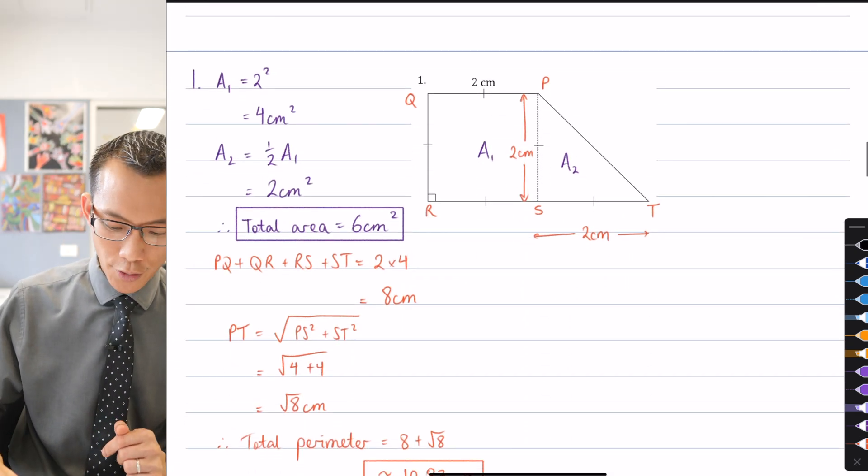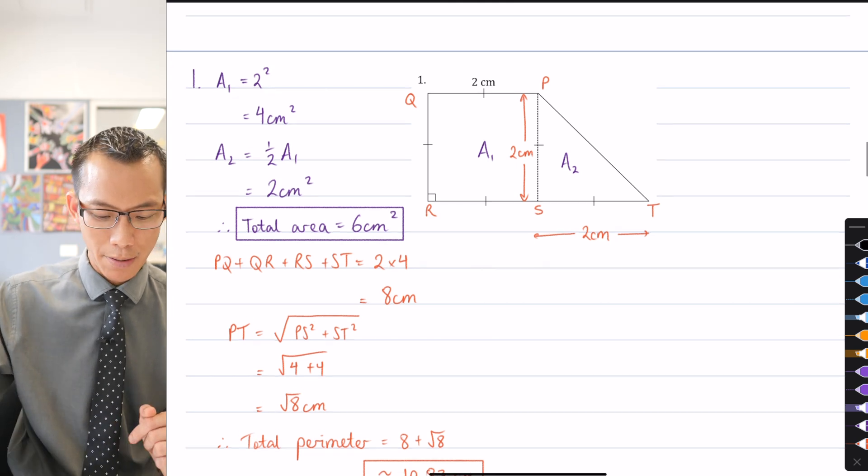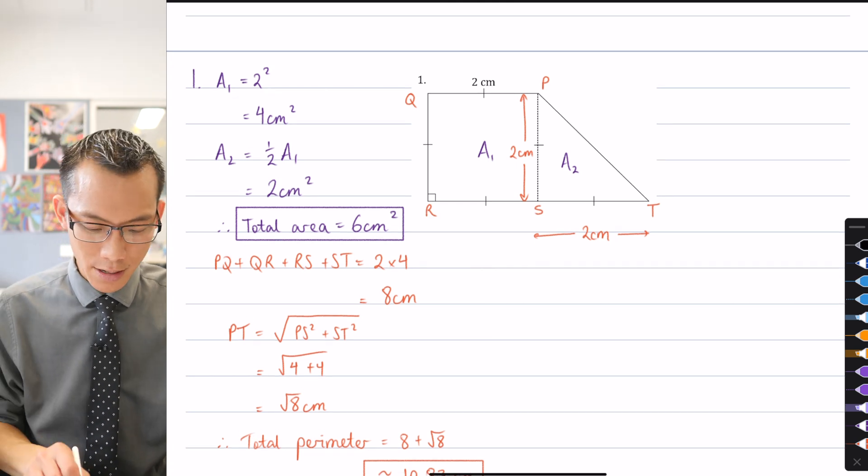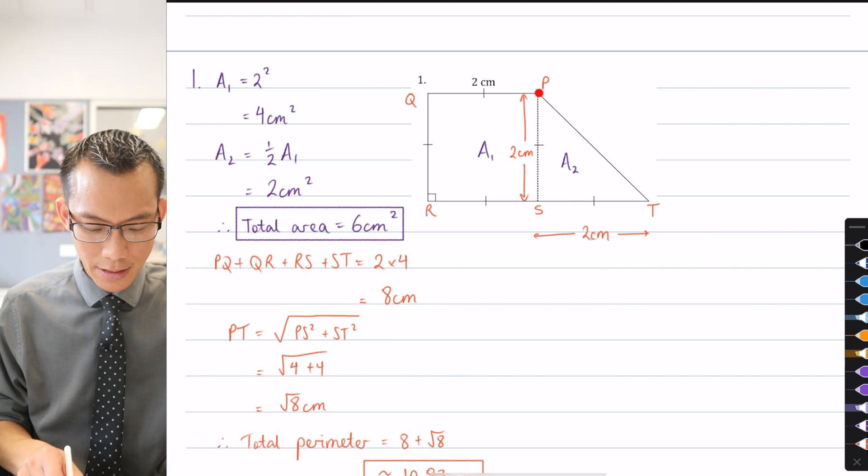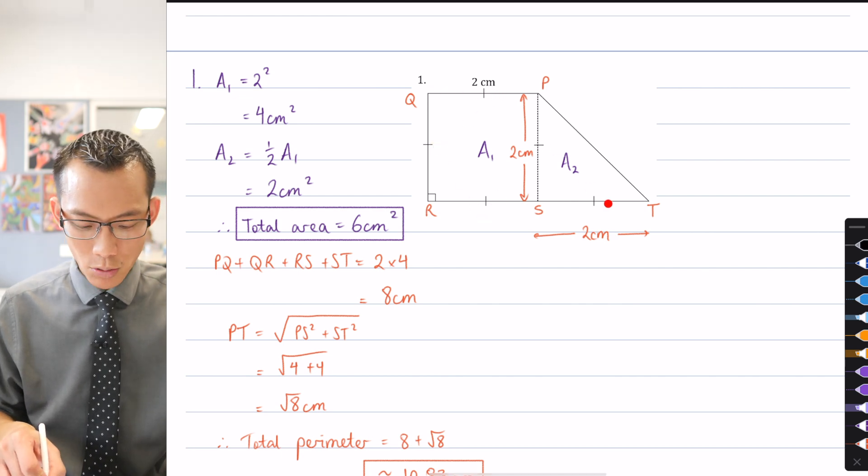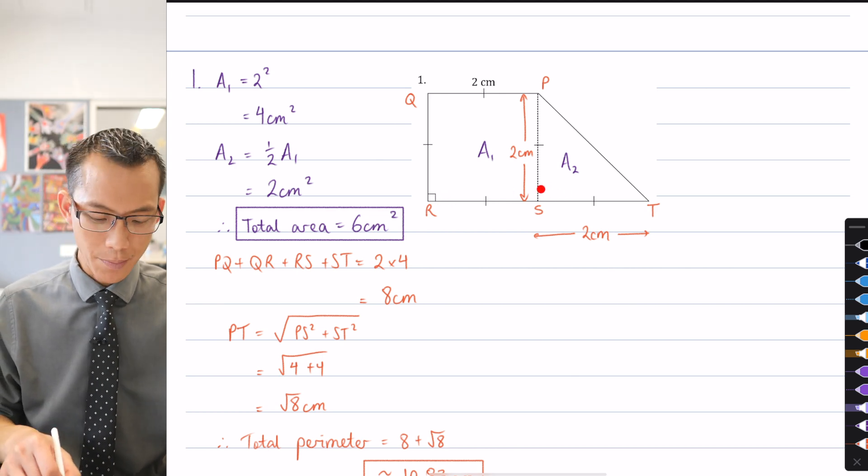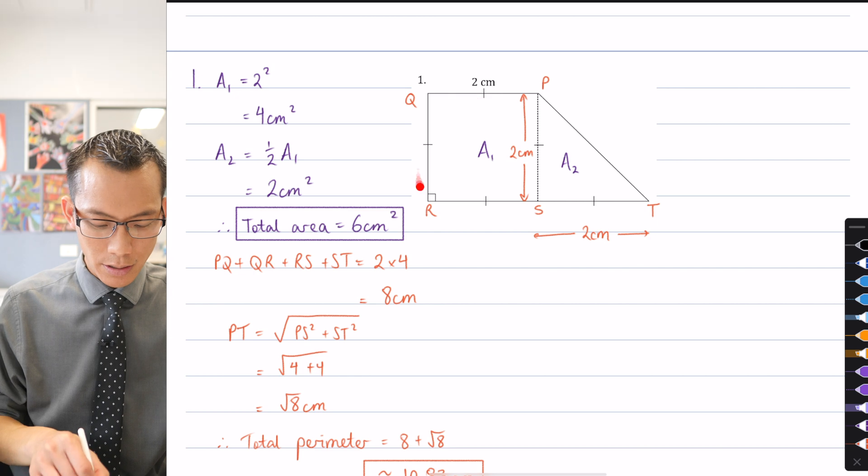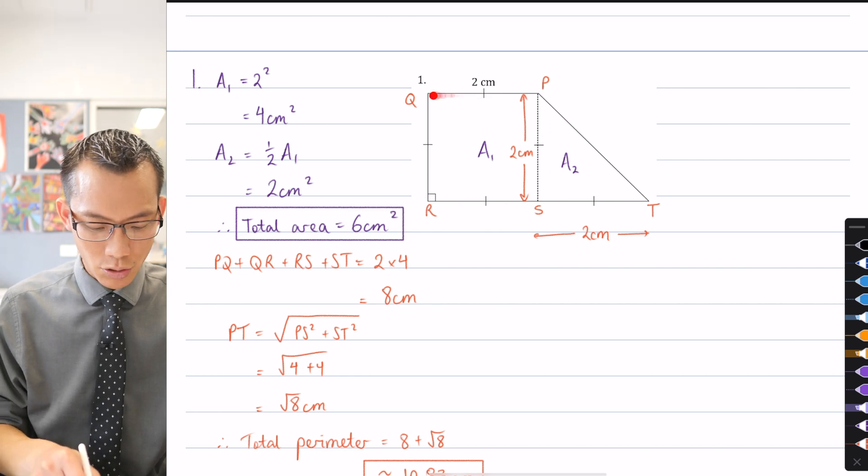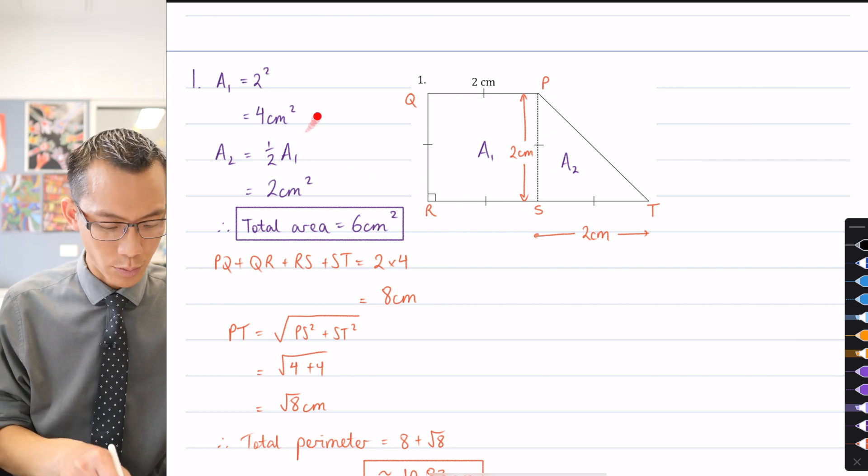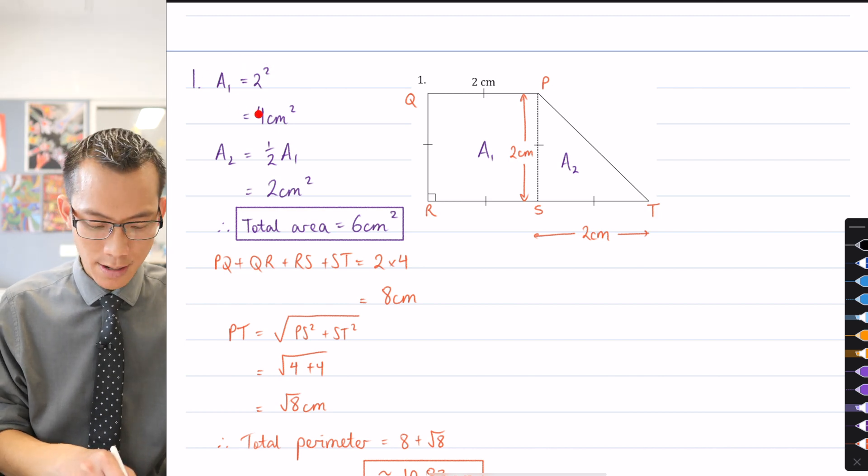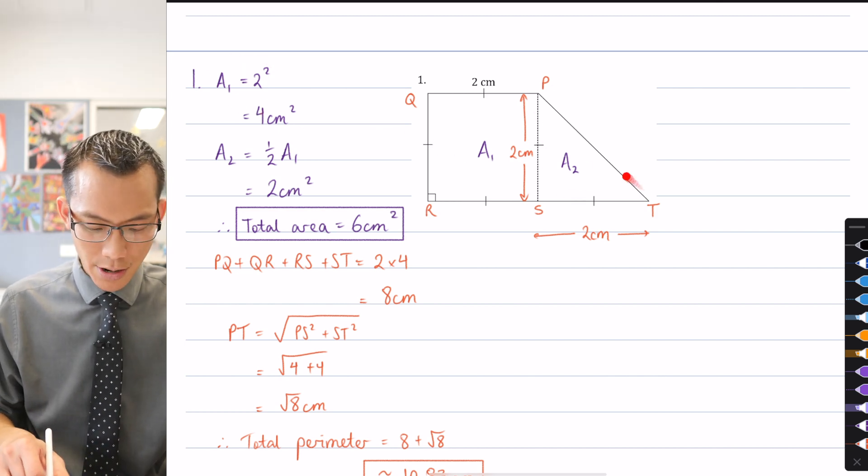So here is the first question and you can see I've already put a bit of working onto the diagram here. All that you get provided is the fact that this is two centimeters. You've got these lengths here that are all equal and then you've got a right angle here and the rest you need to infer. So you can probably tell already this is going to be a square. So it's just two by two and that's where you get this area one over here.